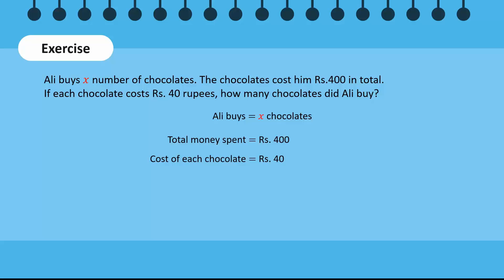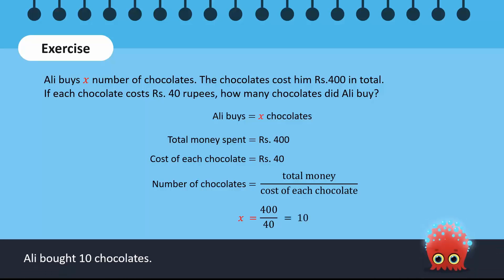We write a formula from the given information. The number of chocolates is equal to the total money divided by the cost of each chocolate. Now, we add the values to the formula. x is equal to 400 divided by 40 which means that x is equal to 10. So, Ali bought 10 chocolates.